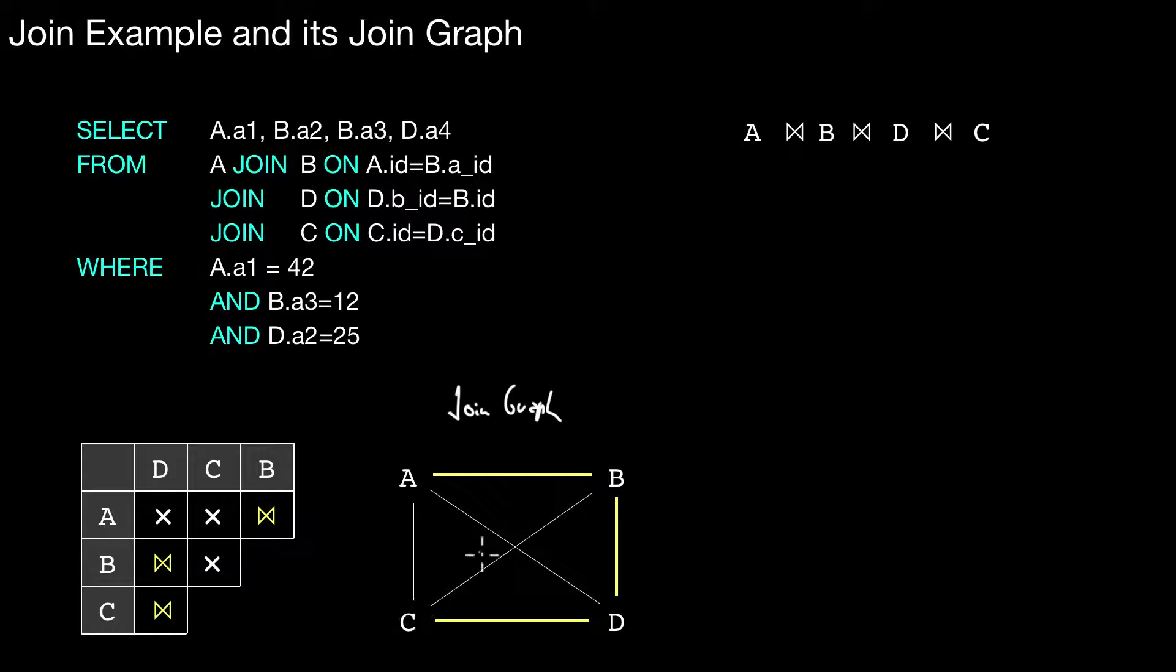Again, all other combinations also exist. Those are those gray shallow edges here. Those are cross products. So it is totally fine to also combine C and B. However, this can only be done using a cross product as also shown here. So that is the join graph for this specific query.